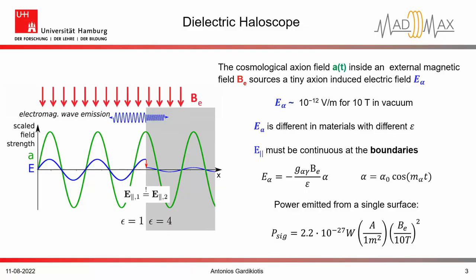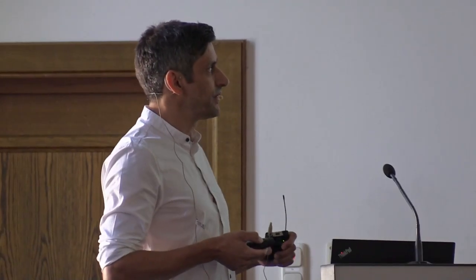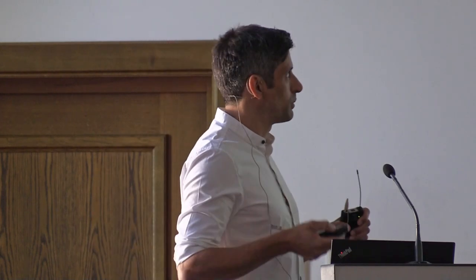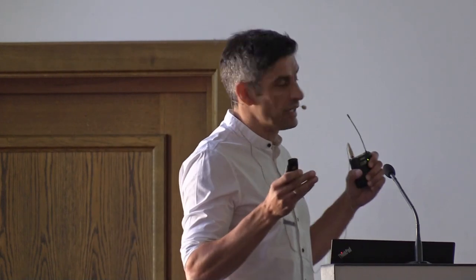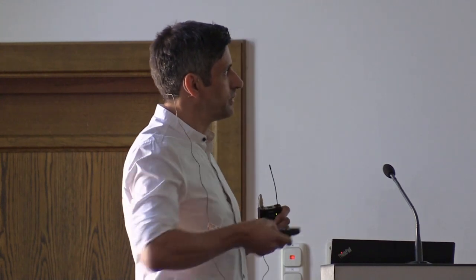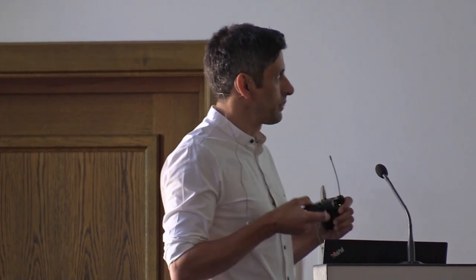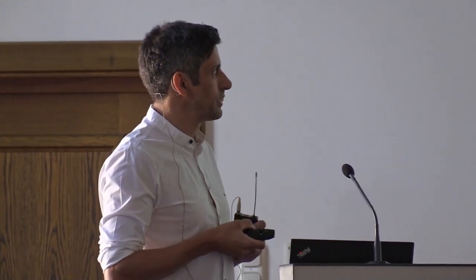To remind some of you: the idea of the dielectric haloscope is that when the cosmological axion field oscillates inside an external magnetic field, this can source a tiny axion-induced electric field, which is of course very small even for a 10 Tesla magnetic field. Because the electric field is different in materials with different epsilon, we have a discontinuity that must be resolved by traveling waves in both directions from a boundary condition, due to the continuity of Maxwell equations. The parallel component of the electric field must be continuous at the boundaries.